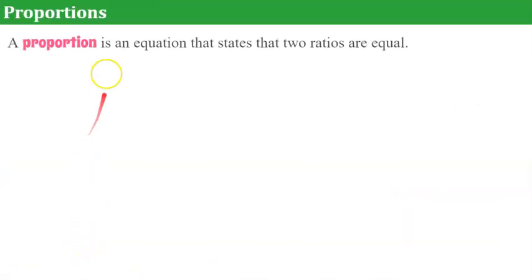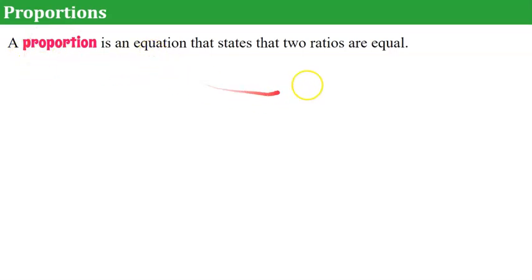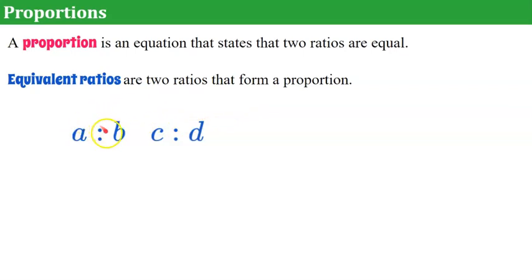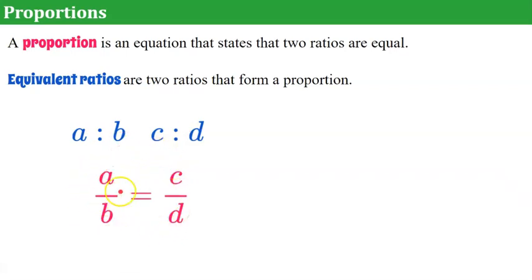A proportion is an equation that states that two ratios are equal, so a proportion is an equation stating equality. Equivalent ratios are two ratios that form a proportion. So if we have a ratio A to B and a ratio C to D, and they're equivalent, then they can make up what we call a proportion — a ratio equal to a ratio.